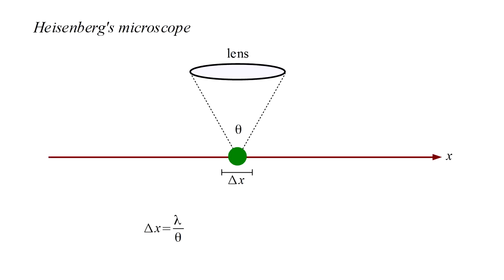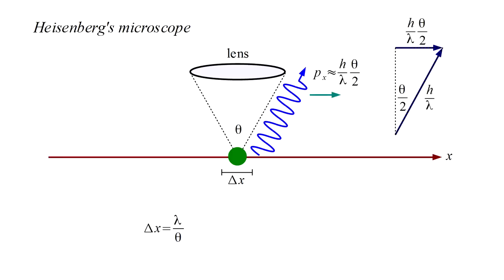But when we detect the photon, all we will know is that it has passed through the lens. It might have traveled towards the right, in which case it will have an x component of momentum equal to h over lambda times theta over two. Or it might have traveled towards the left, in which case the px component is the negative of that. The uncertainty in the photon's x component of momentum is the difference of these values, or h over lambda times theta.